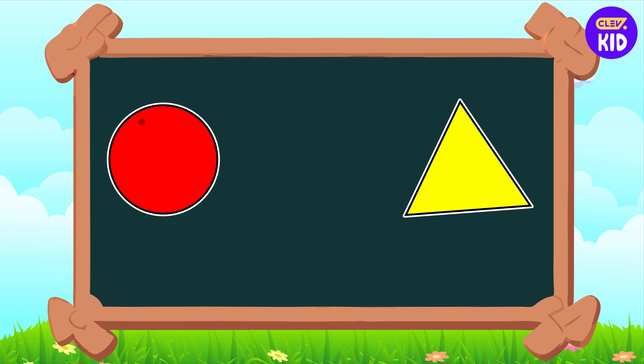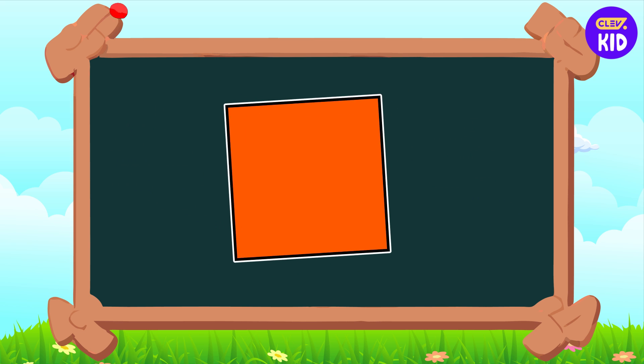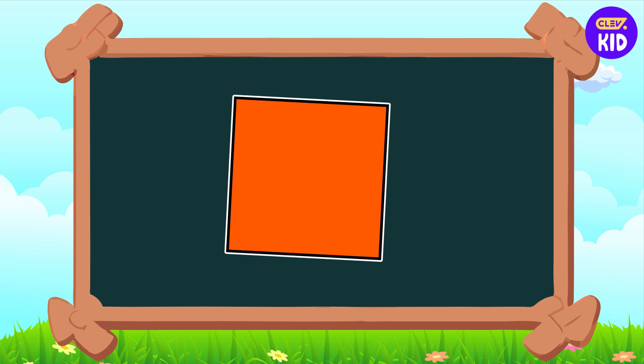Here, we have two primary colors, red and yellow. Let's mix them and see which color is formed. So the color orange, which is a secondary color, is formed when the two primary colors, red and yellow, are mixed together. Let's see another example.